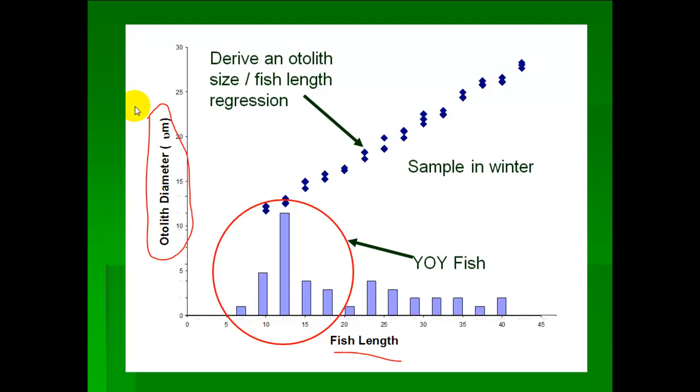You get a lot of mortality over that winter, but if you see a modal group like this toward the smaller sizes, that has to be the young of the year fish. Any fish that are older than young of the year are going to be a little bit larger and you start to get a lot of overlap in the larger fish. And as fish get older and their growth slows, you start to get overlap, which we saw when we talked about the length frequency technique.